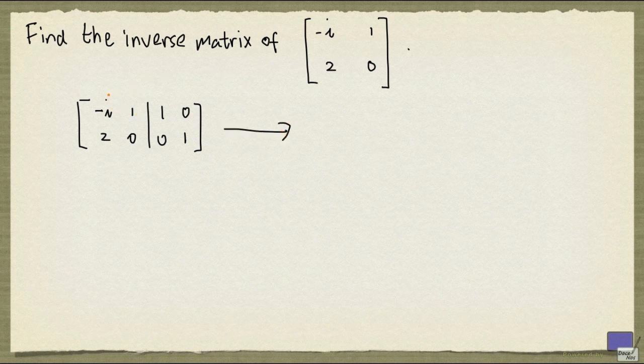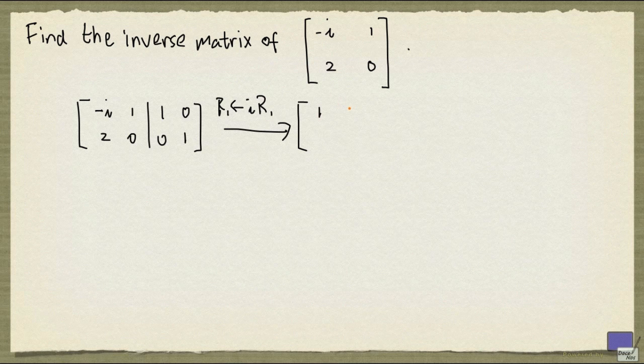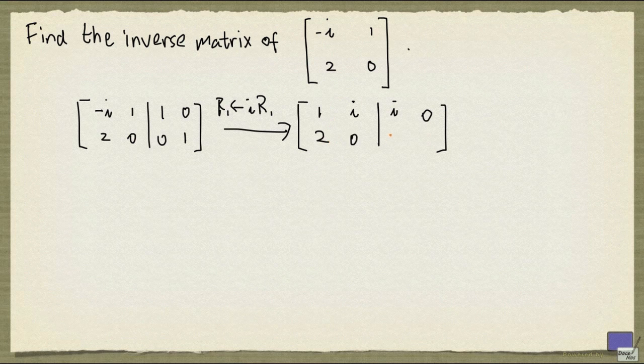So the first step I'm going to do is make this a 1, and to do that I can multiply the row by i, so that will give me minus i squared, which is minus minus 1, and that's 1. It's just i, i, and 0. And the second row is just the same.